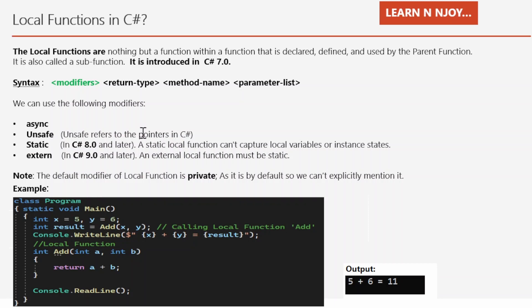These modifiers are available from C# 7.0 onward, whereas the static modifier is available in C# 8.0 and later versions, and extern from C# 9.0 onward. The default modifier of the local function is private, however we cannot explicitly write it.